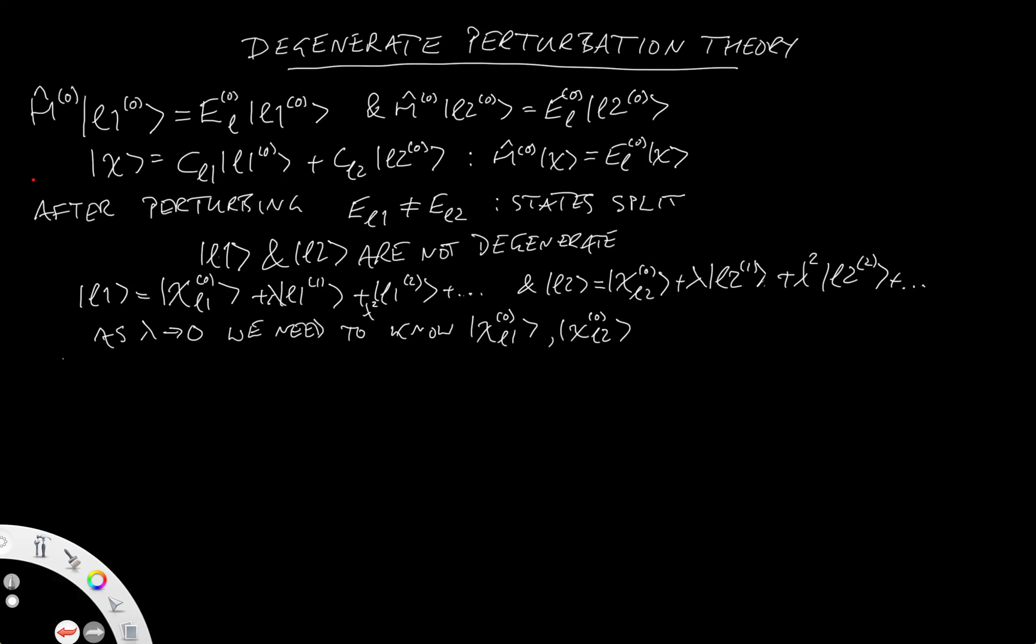So what we do is we write chi_L1 of 0 is equal to C11 of L1 of 0 plus C12 of L2 of 0. And the same for chi_L2.